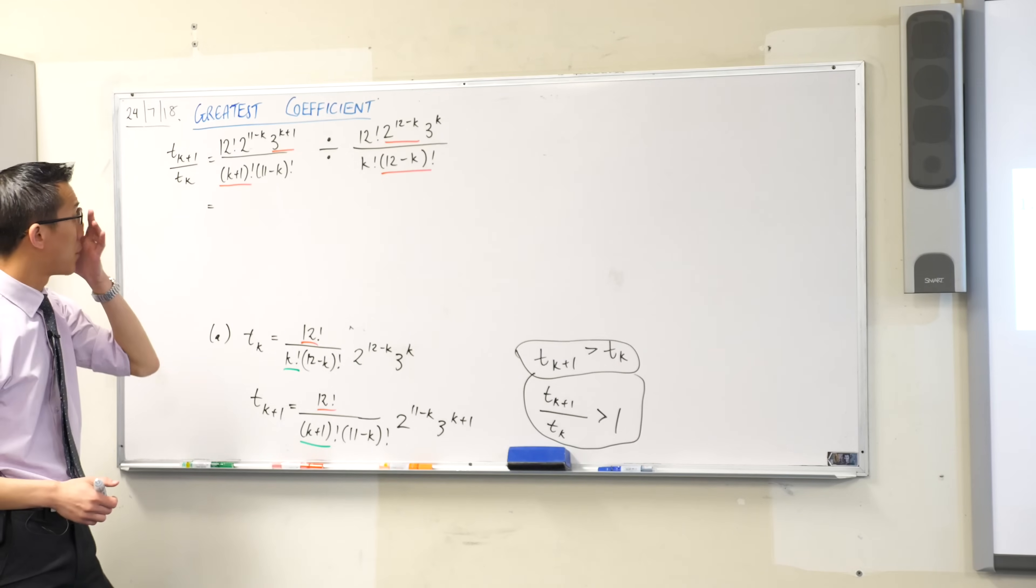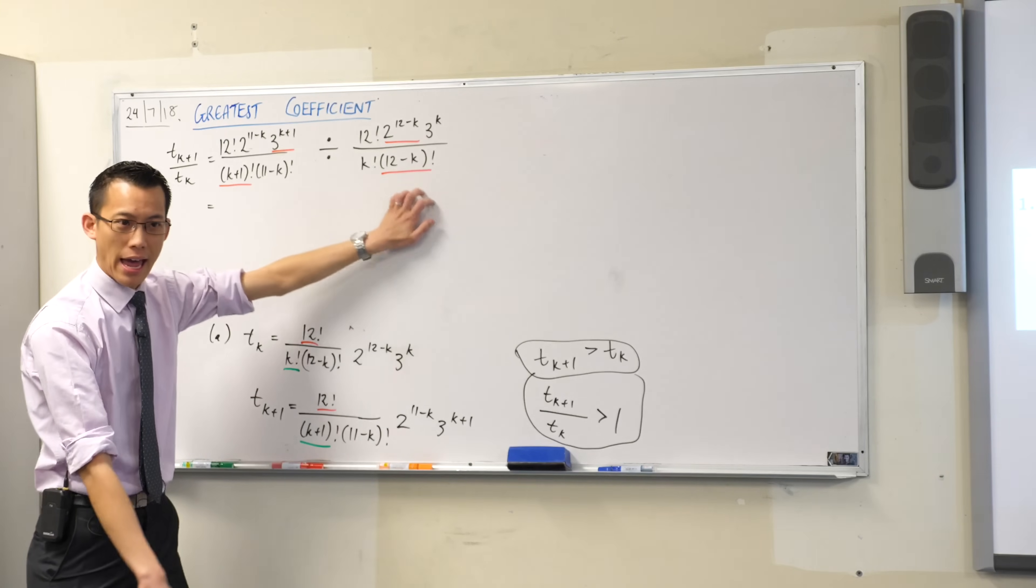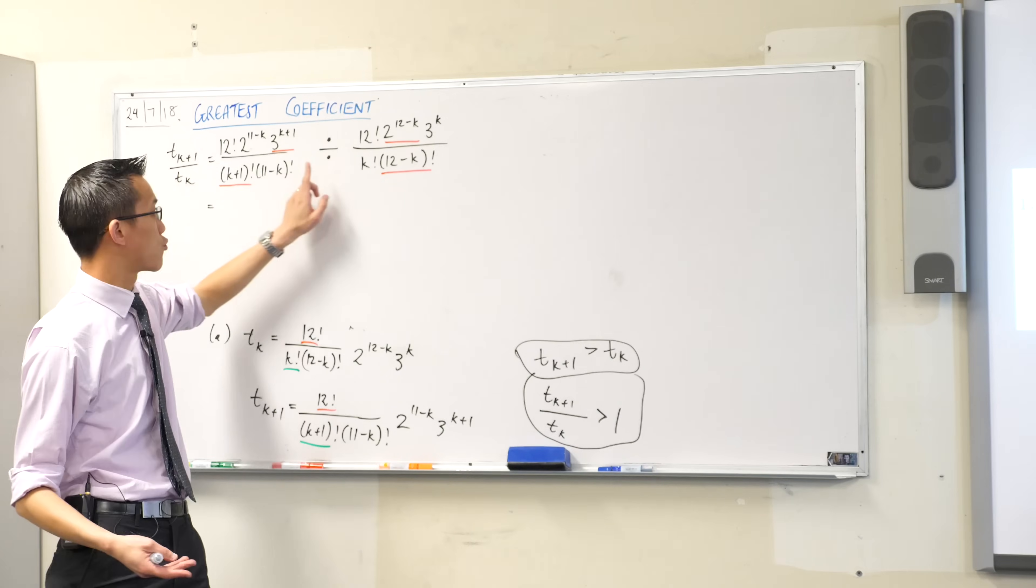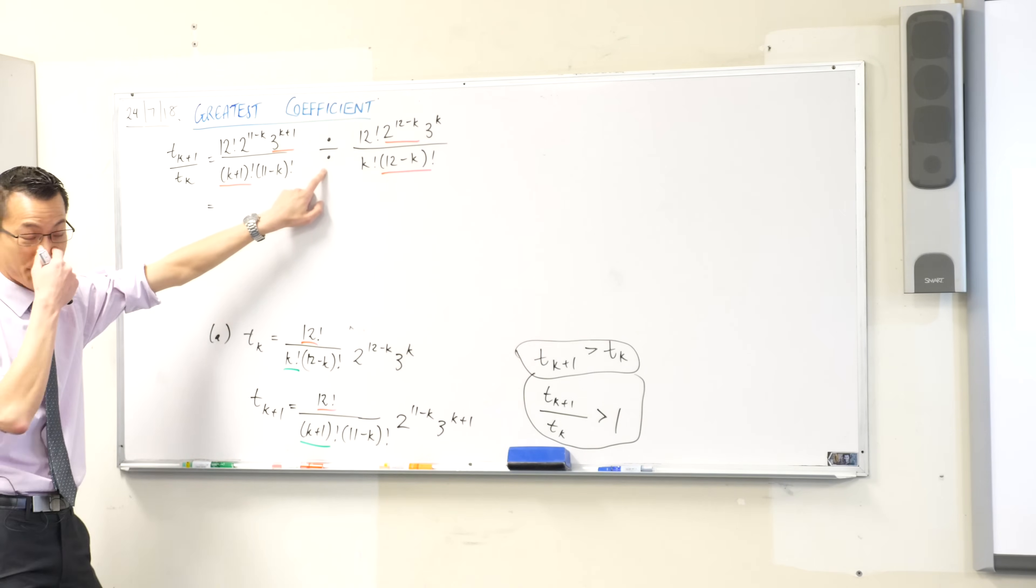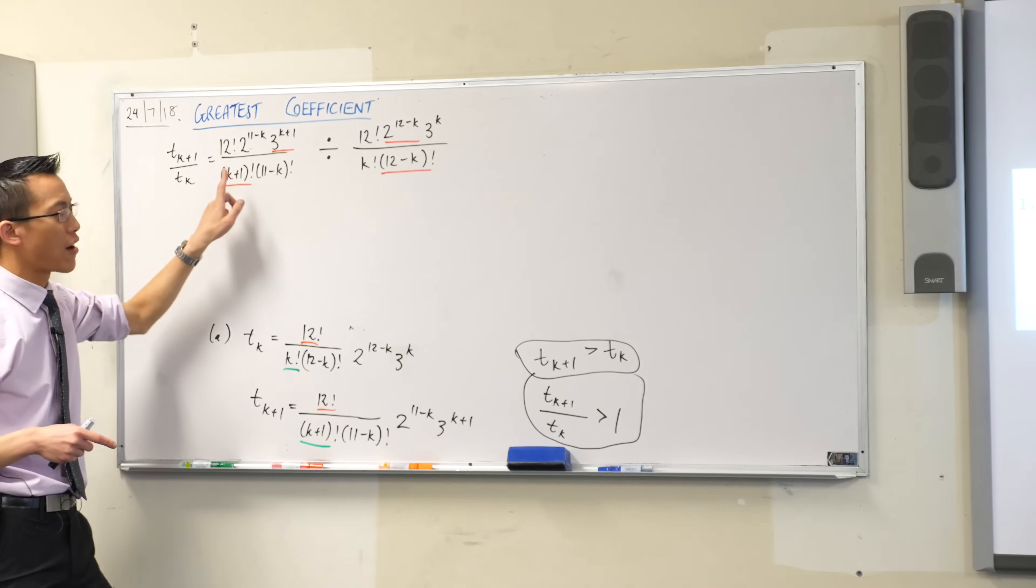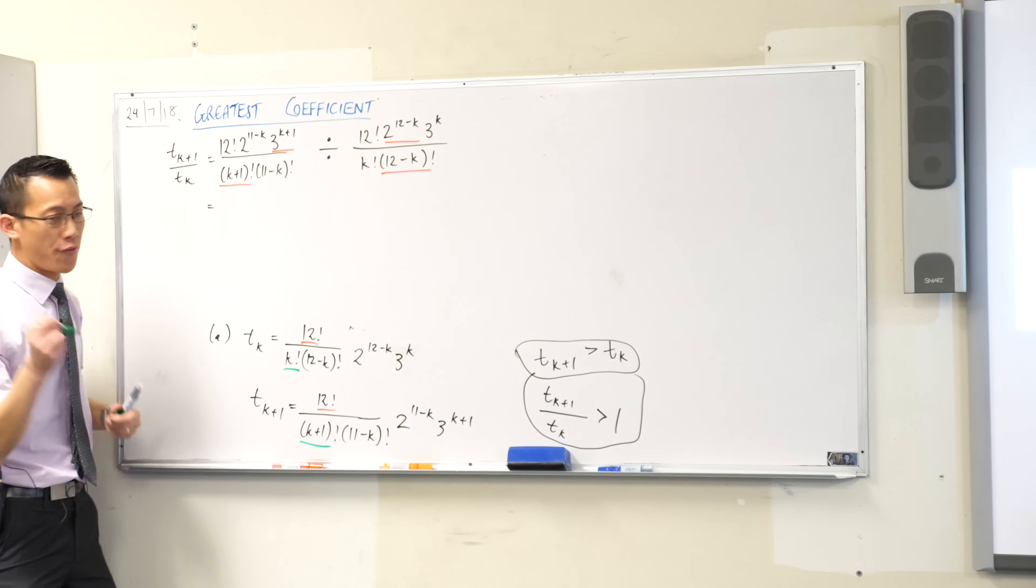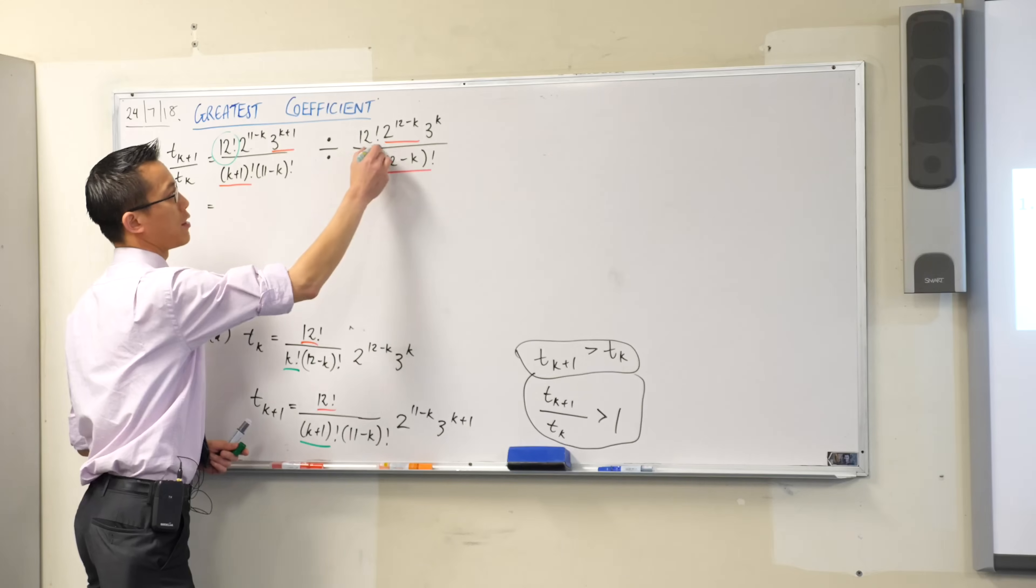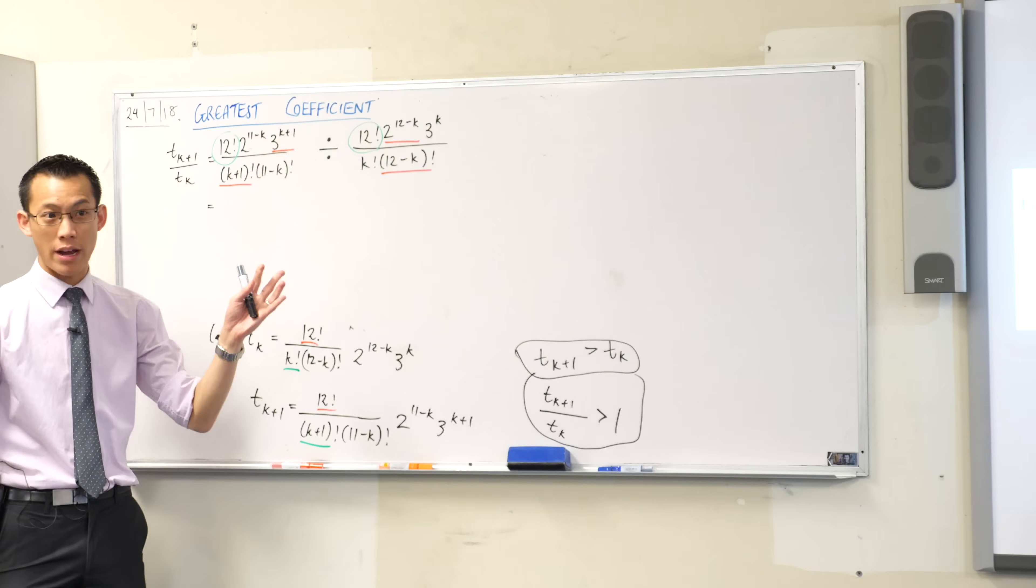So what have I written down? Well here's t of k plus 1 right down here, and here is t of k. Rather than write fractions on fractions because it will become quite messy, I've just written this divided by that. So I've got a big fat division sign so I don't mistake it for a subtraction sign. And then I want you to have a look. You'll notice that I have underlined a few terms, and I've underlined some very specific ones. Firstly, before I explain that, you'll notice that the 12 factorial here and the 12 factorial here, they're just going to disappear in my next line. Are you okay with that? I'm just going to cancel them straight out.